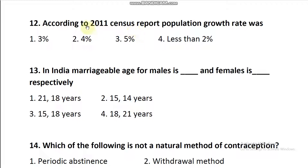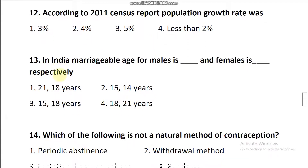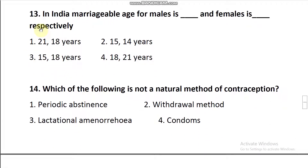Question number 13: In India, the marriageable age for males and females respectively — the marriageable age decided by the government of India is 21 years for males and 18 years for females.